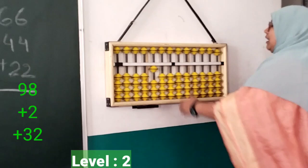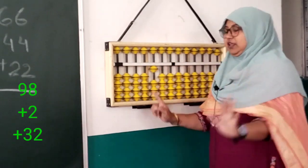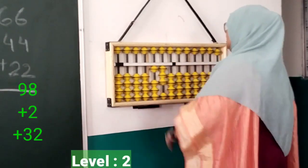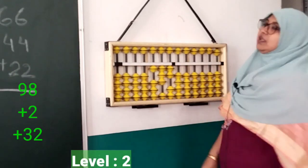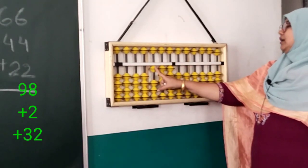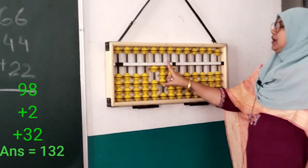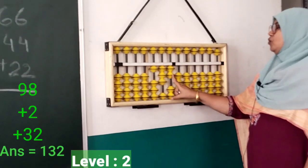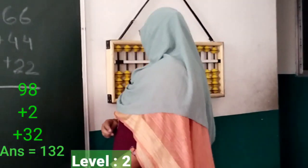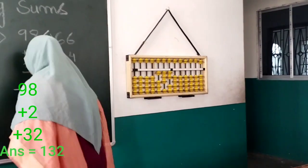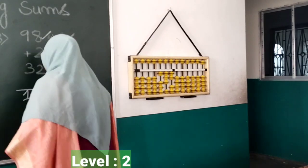The next part is thirty-two. Our tens and ones place are now free, so we do three with index finger and two with thumb. The answer is one in the hundreds place, three in the tens place, and two in the ones place — one hundred thirty-two.